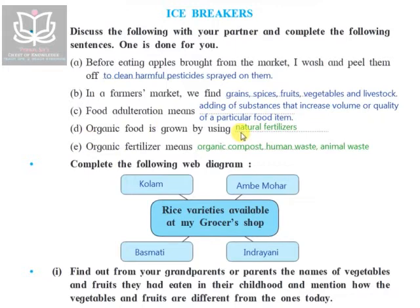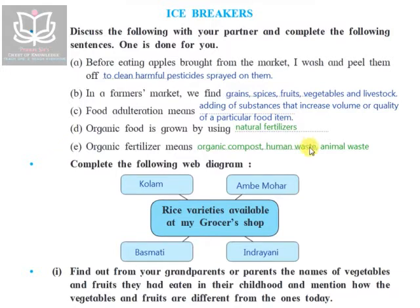Organic food is grown by using natural fertilizers. Organic fertilizers are natural fertilizers — things such as organic compost, a mix of remains of animals, plants, or vegetables, along with human waste (both urine and feces) and animal waste (both urine and feces of animals).